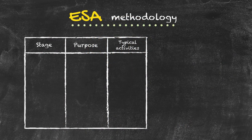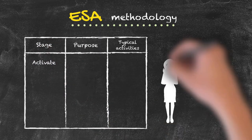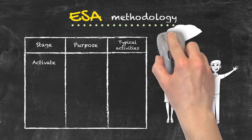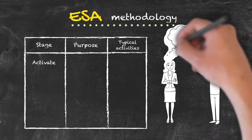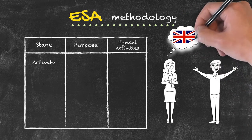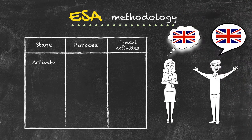And so, on to the final phase of the ESA lesson, which is called the activate phase. What we have done so far, if you remember, is to engage the students to get them talking and thinking in English. Where possible, we've elicited the teaching point from the students and covered any gaps in knowledge to make sure that the teaching point has been fully covered.